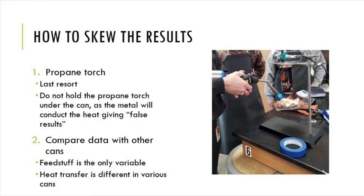Students will never get perfect results with the setup in this lab as you would within a bomb calorimetry setup within an animal science laboratory. However, there are a few things that can skew the results. One is improper use of a propane torch. Propane torches are a last resort, but if you pull one out, try not to hold it directly under the can — even if you're collecting data afterwards, you are putting heat into the area and allowing that conductivity to happen, giving false results. Next, comparing data with other cans: the feedstuff should be the only variable. The can you use should not be a variable within this lab.